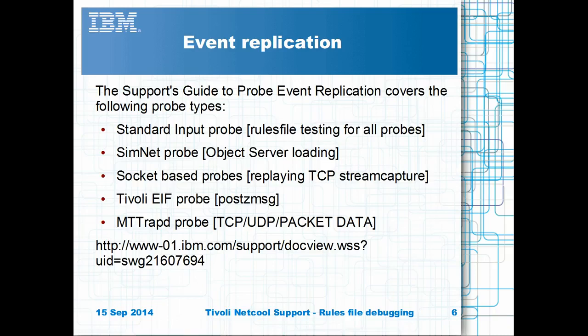The simnut probe is available from Passport Advantage. This probe can be used to create synthetic events or used for testing rules file logic by setting specific tokens in a test harnessed rules file. Please refer to the support guide to event replication for further details on the available methods.